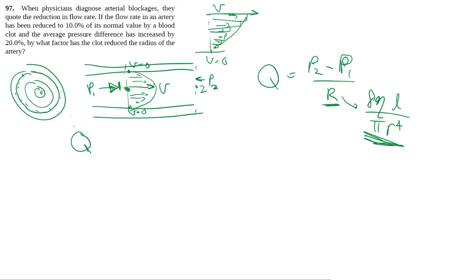So what we know is that my volume flow rate Q here, when it's clot, it's only 10% of when it's completely open. We also know that the pressure drop, this P2 minus P1 thing, when it's clotted, it's 1.2 times of that when it's open because it's 20% more.